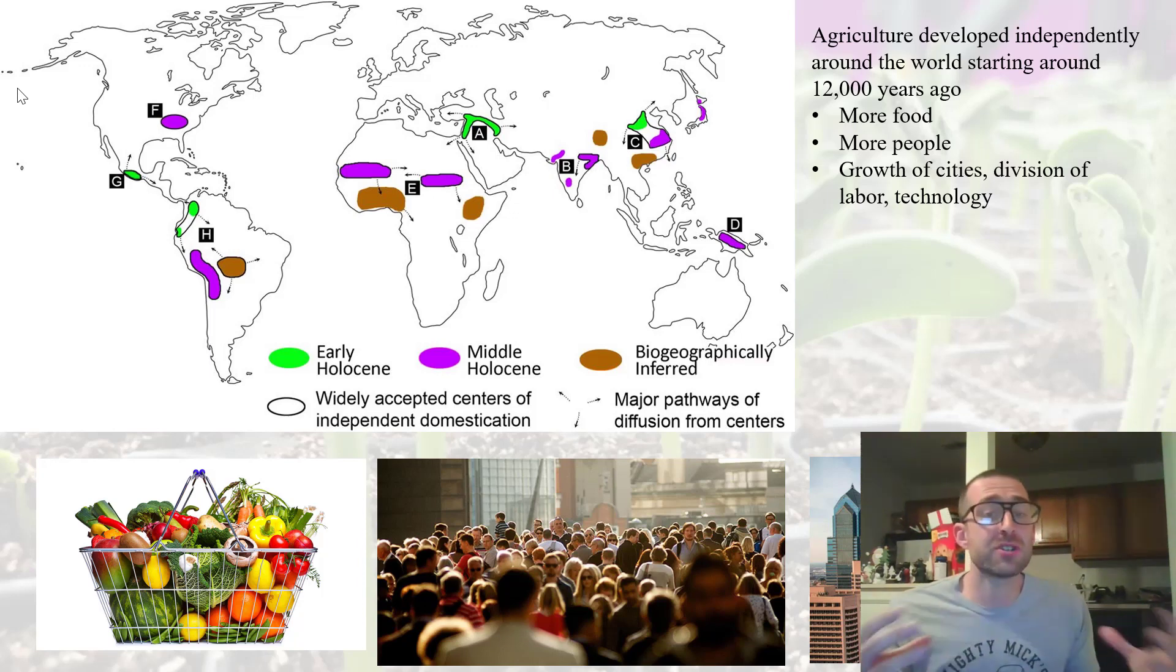We could have this division of labor. And as a result, we had the buildup of cities, and people had different jobs, and then we had advances in technology, and all of this that eventually led us to modern society that we have today. Without agriculture, we wouldn't have society that we have now or the way of life that we have now. And really, that is all based on this simple idea of being able to create new plants.